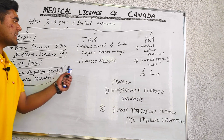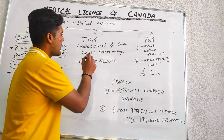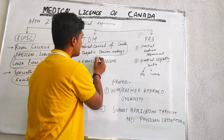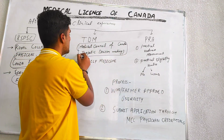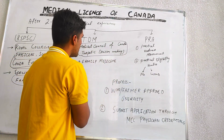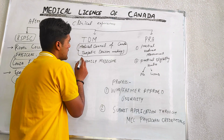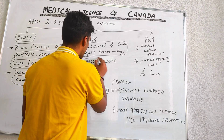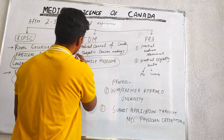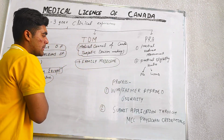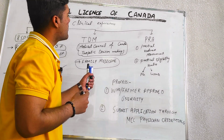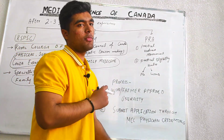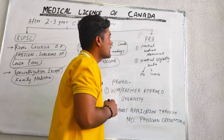The second pathway is through the Medical Council of Canada's Therapeutic Decision Making, or TDM exam. You can do specialization in family medicine by passing this exam.